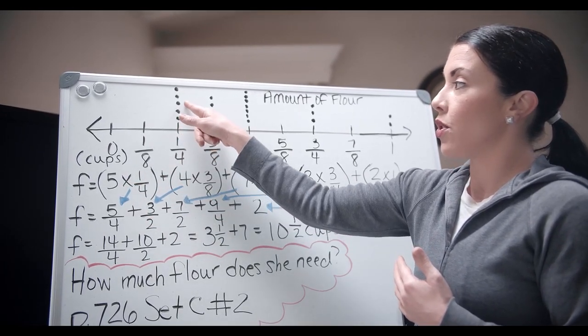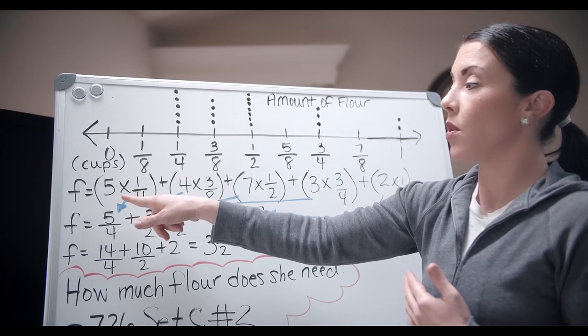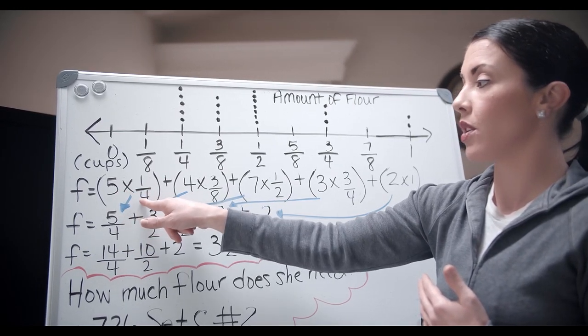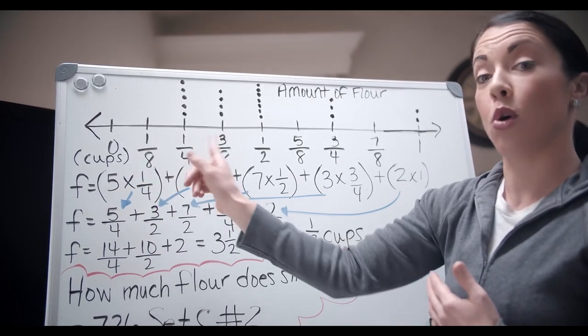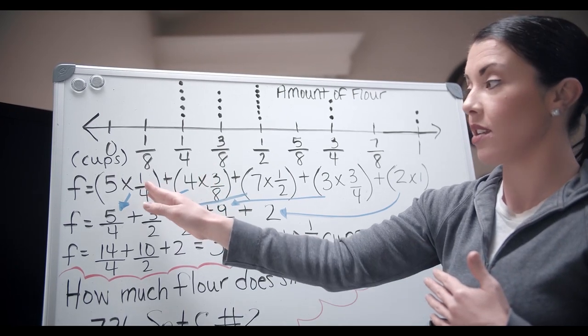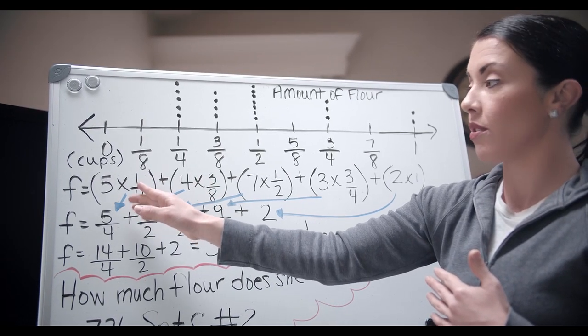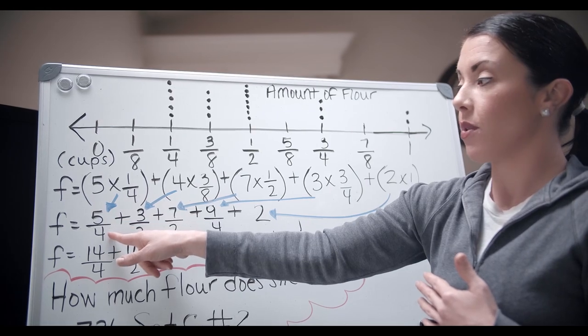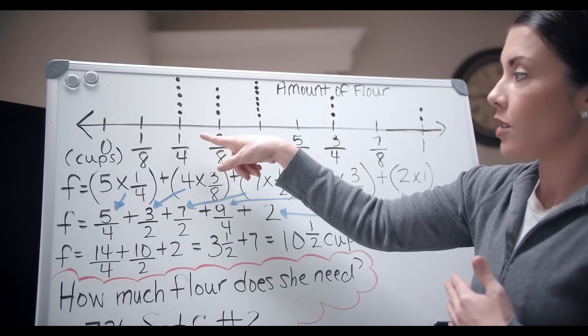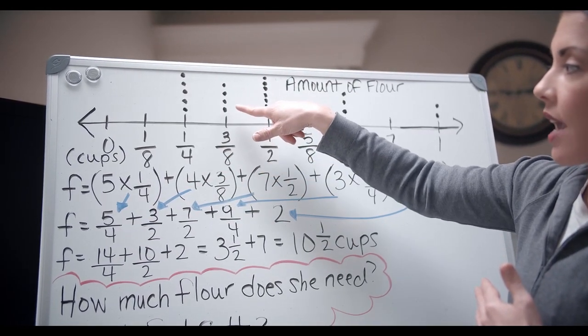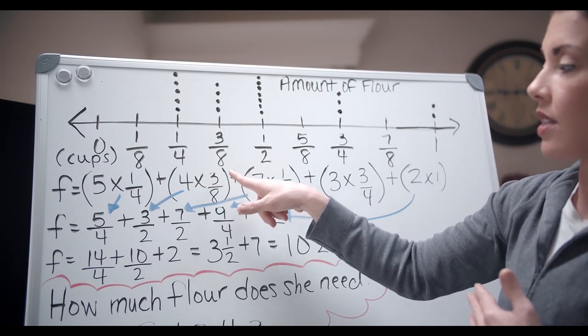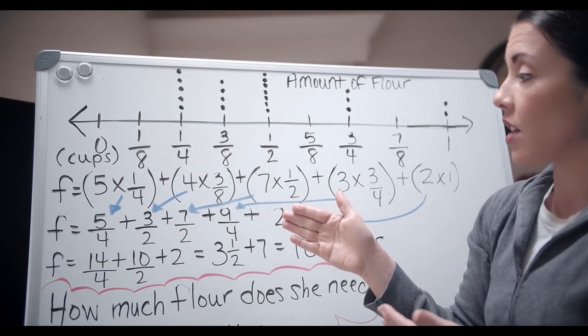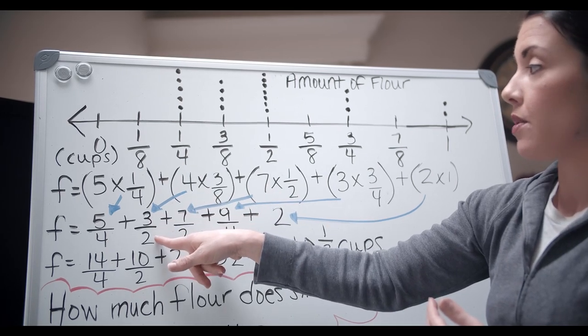So I have one, two, three, four, five, five dots at one fourth. So five times a quarter. I went ahead and multiplied. We did this the other day. So hopefully this is just a little bit of a refresher. Five fourths. My next point was four times three eighths. One, two, three, four, four times three eighths. When I multiplied straight across, I got three over two.